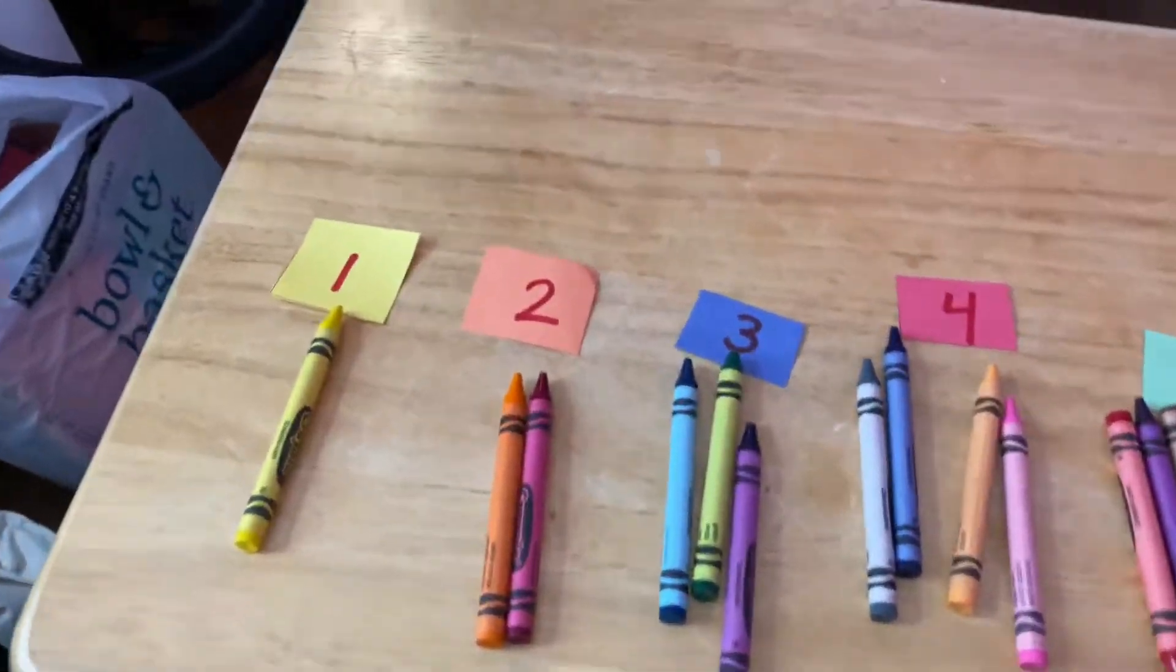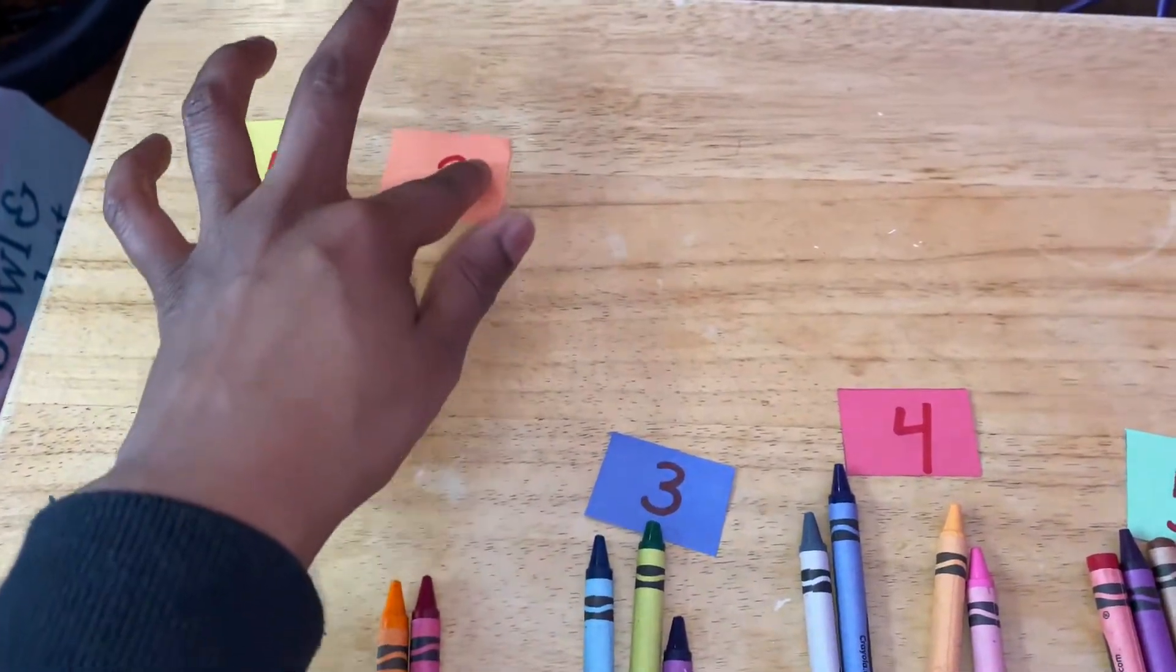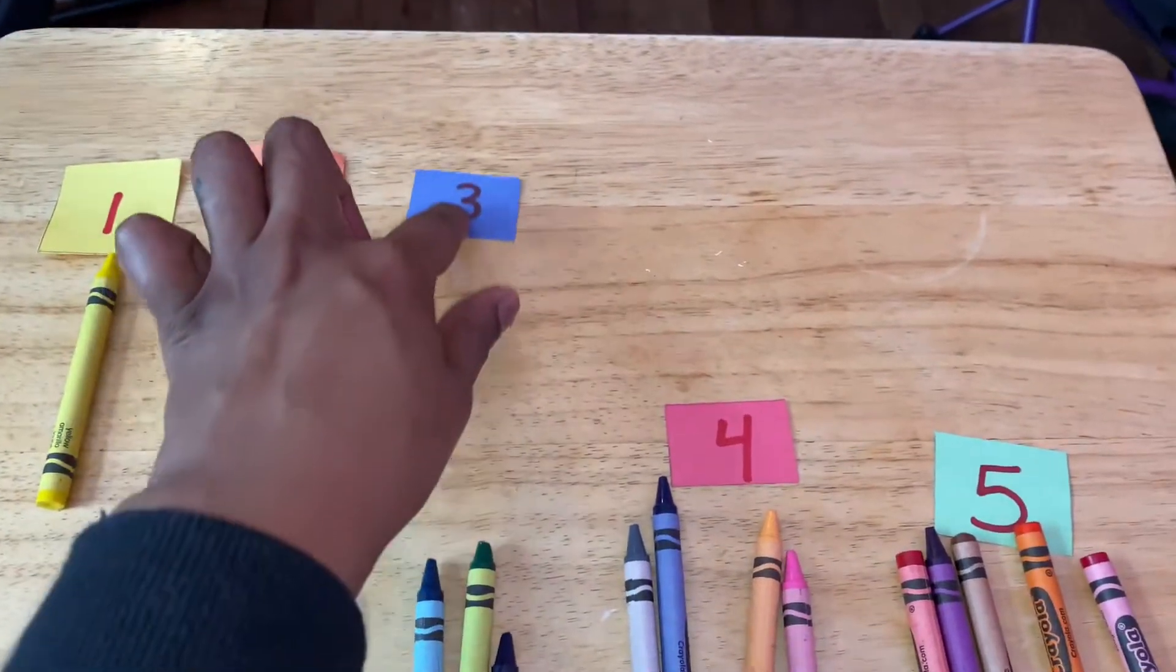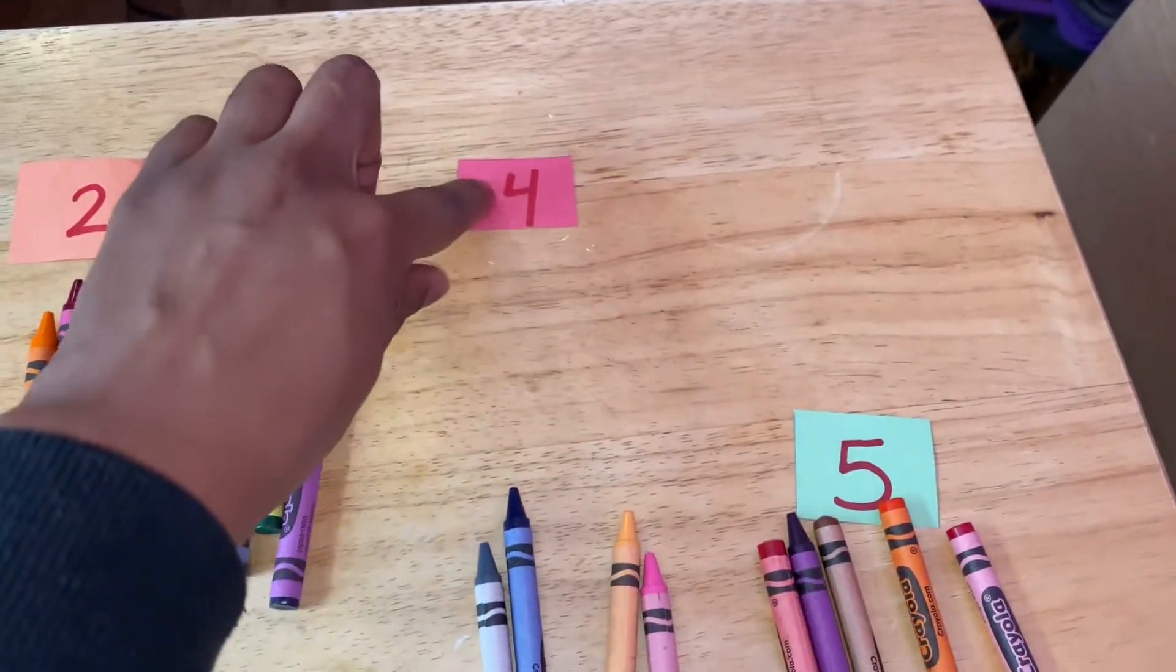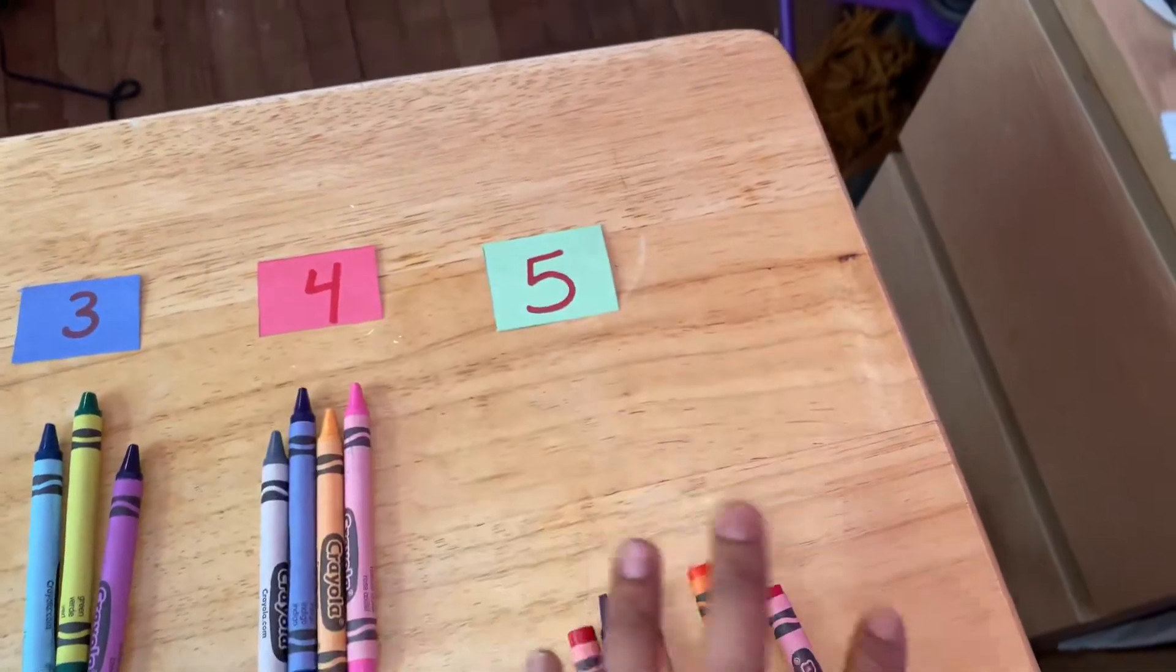So you have number 1 goes with 1 crayon. 2 goes with 2 crayons. 3 goes with 3 crayons. 4 goes with 4 crayons. 5 goes with 5 crayons.